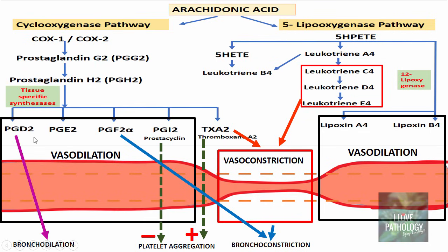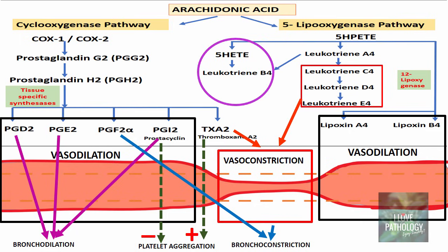Bronchodilation is brought about by PGD2, PGE2 and prostacyclin. Another important effect in inflammation is chemotaxis, which is brought about by leukotriene B4 — one of the most important chemoattractants. Lipoxin A4 and lipoxin B4 inhibit chemotaxis. This illustration helps you understand the various effects of arachidonic acid metabolites.